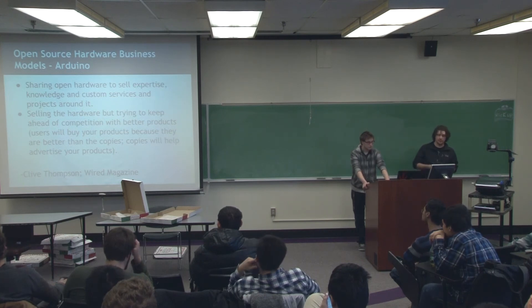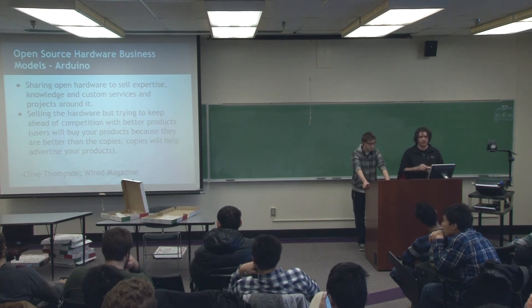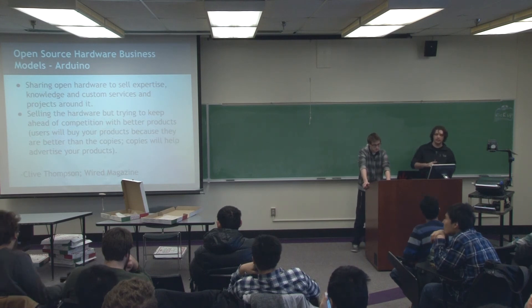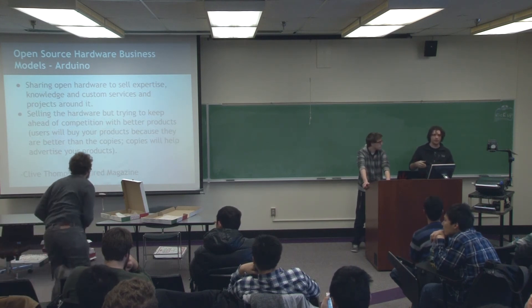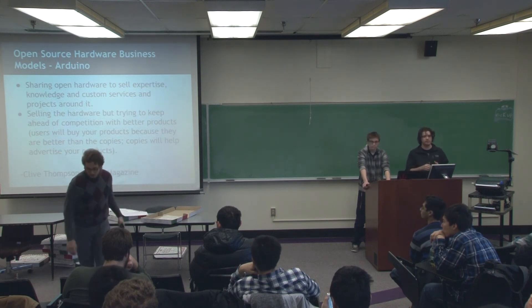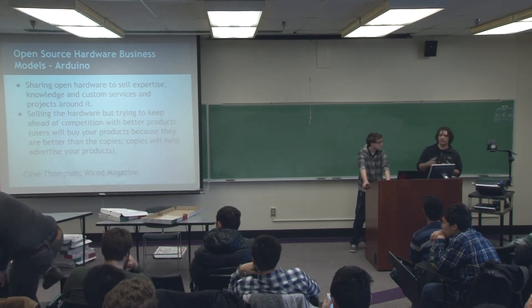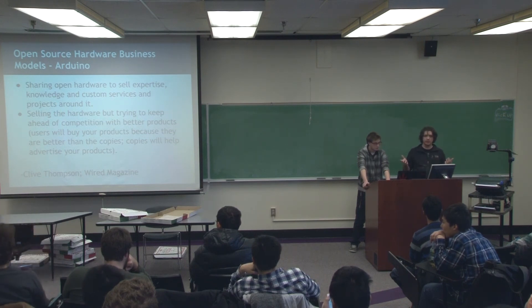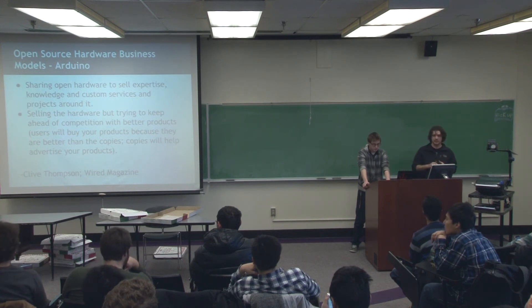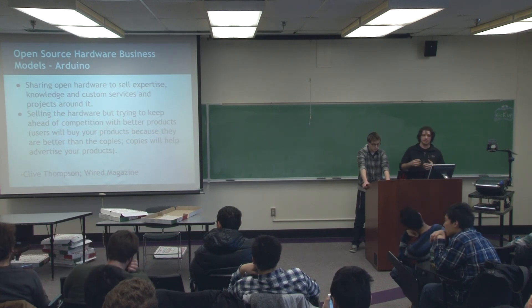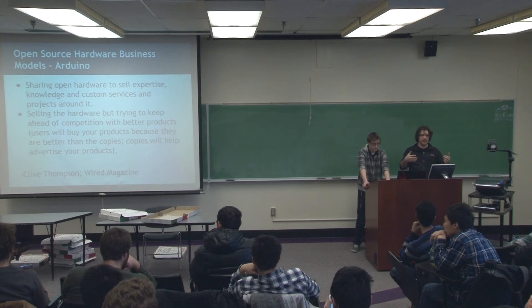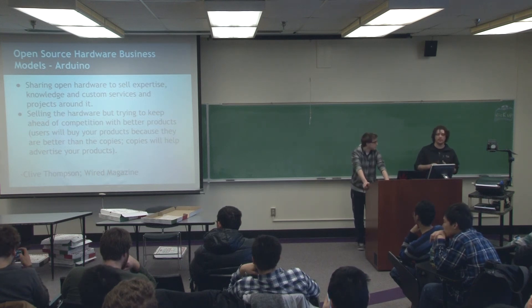An example of an open hardware business model is Arduino. Arduino is open source hardware at its core. What Arduino accomplishes is by selling their open hardware assembled as a unit — you can build your own if you want, or even build a million of them and try to sell them and compete with Arduino. But because Arduino has the name — and the name is what they've copyrighted, which is not open source — they're able to make quite a bit of money and continue their development to stay ahead of competition and keep promoting open hardware.